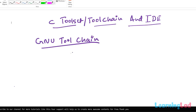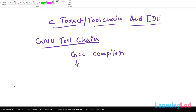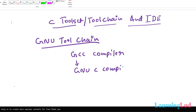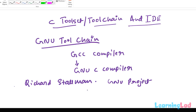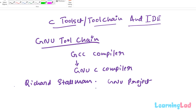The GNU tool chain provides us the GCC compiler. Originally when it was created, GCC stood for GNU C compiler. It was created by Richard Stallman, who is the founder of the GNU project. Richard Stallman founded the GNU project in 1984 to create a complete Unix-like operating system as free software.